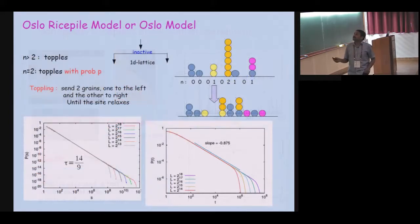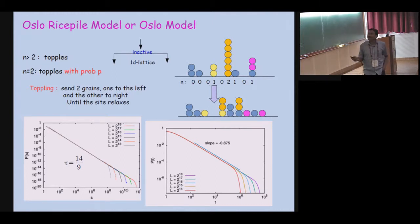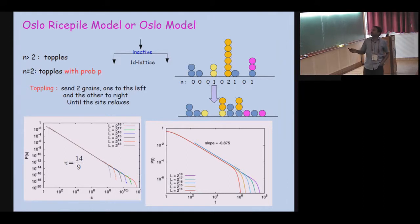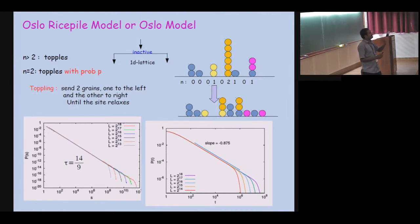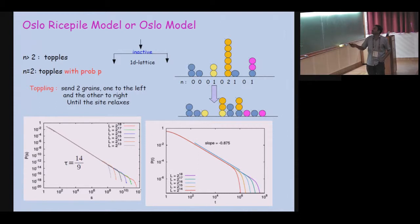To model sand piles, the model we take is called the Oslo rice pile model. You have a one-dimensional lattice with particles. If a site has two or more particles, those sites are called active — active sites topple. If n is greater than two, that site always topples; if n equals two, it topples with probability P. When toppling, two particles go to the left, two to the right, and two remain. That is one toppling event.